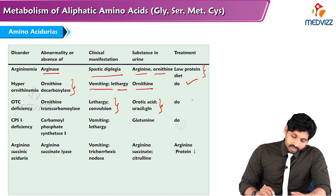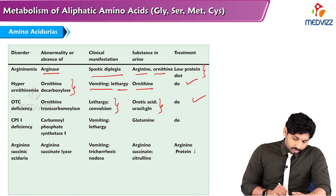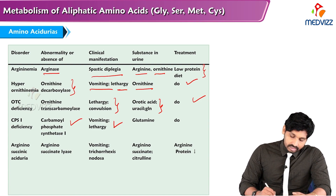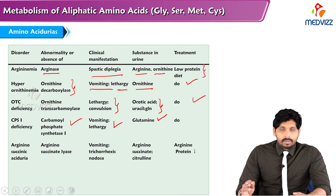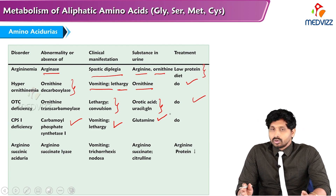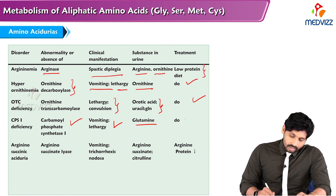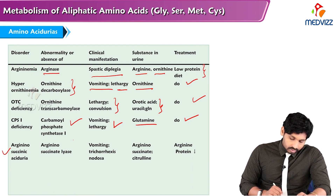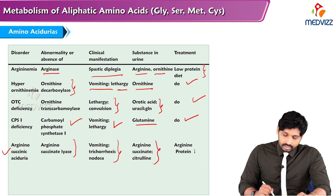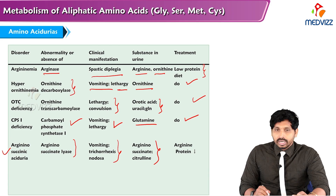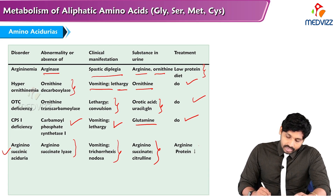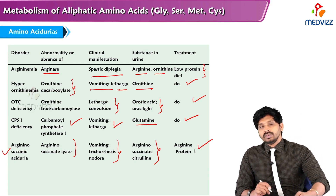Carbamyl phosphate synthase 1 (CPS1) deficiency presents with vomiting and lethargy. Glutamine accumulates in the urine because it cannot be converted to glutamate and then to ammonia. Low protein diet is required. Argininosuccinic aciduria is due to argininosuccinate lyase deficiency, presenting with vomiting and trichorrhexis nodosa. Both argininosuccinate and citrulline appear in the urine. Treatment involves providing arginine and a low protein diet.